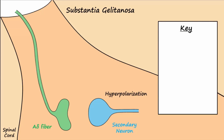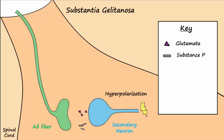Taking a closer look, note that the pain signal is transmitted from the primary neuron to the secondary neuron by way of excitatory neurotransmitters, like substance P and glutamate, being released from the primary neuron to bind to receptors on the secondary neuron, causing EPSPs, or excitatory post-synaptic potentials in the membrane of the secondary neuron, leading to an action potential that can then be sent along the secondary neuron to the brain.